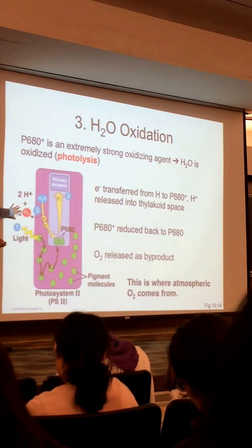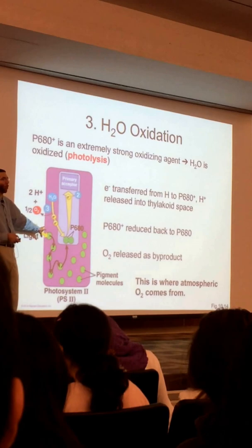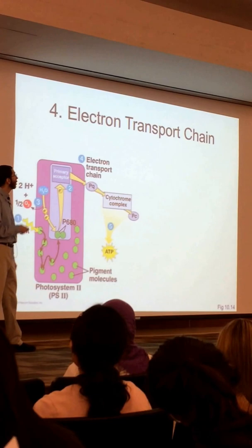So far we're three steps in: we've captured a photon, transferred that energy into the form of an electron, and recovered that electron by splitting water. This is all taking place in photosystem II.